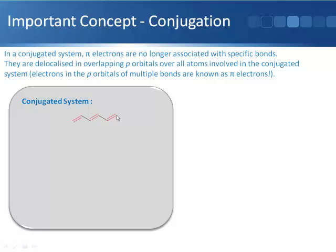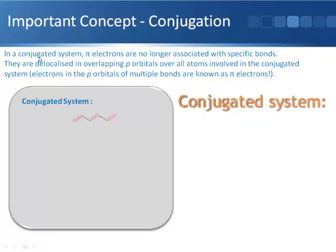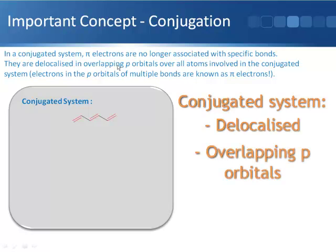For double bonds to be conjugated, they need to be no more than one single bond apart. In a conjugated system, pi electrons are no longer associated with specific bonds — they are delocalized in overlapping p orbitals over all atoms in the conjugated system.